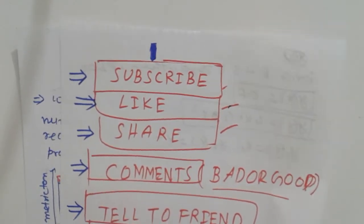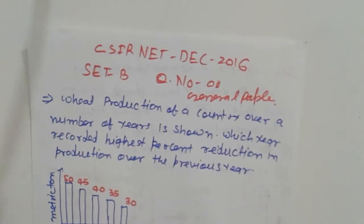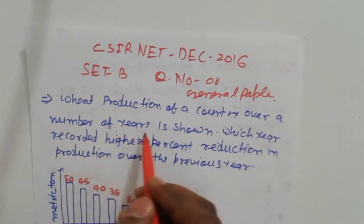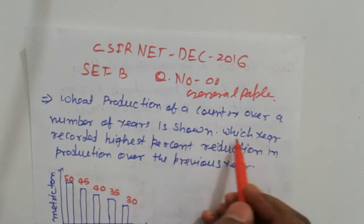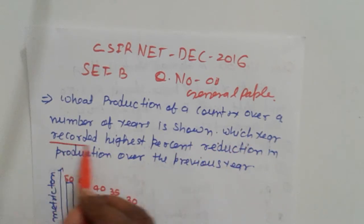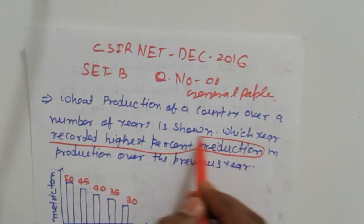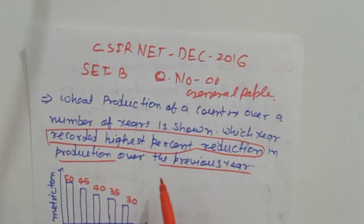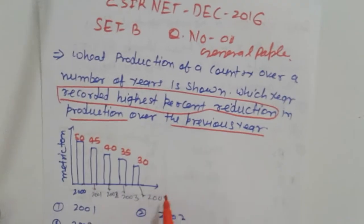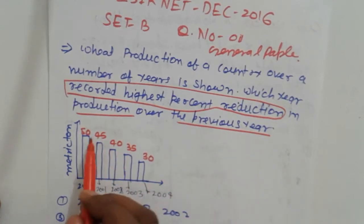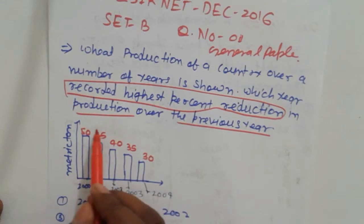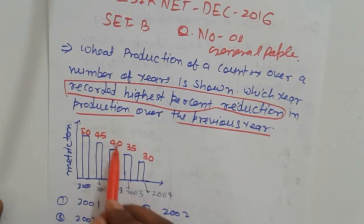The question is about production of a country over a number of years. Which year recorded the highest percentage reduction in production over the previous year? The values are 50, 45, 40, 35, and 30, with a difference of 5 each time.